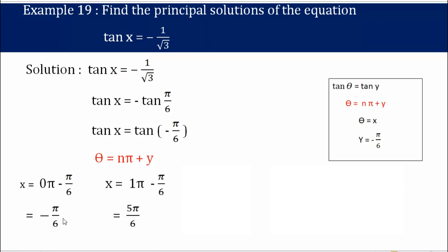For n = 1: x = π + (−π/6) = 5π/6. Since π/6 is 30°, 5×30 = 150°. As 150° falls between 0° and 360°, this is a valid solution.